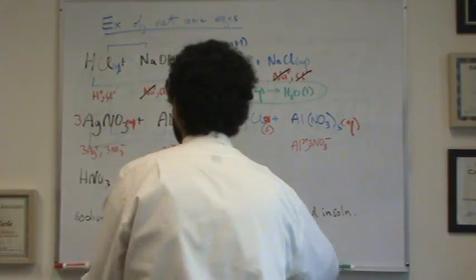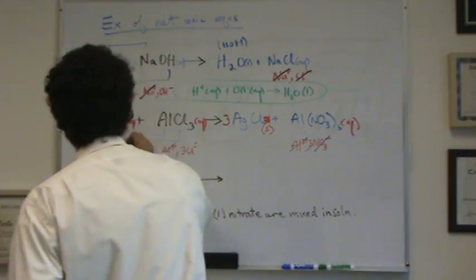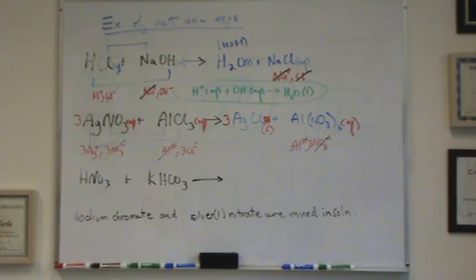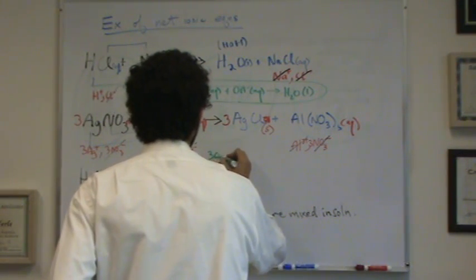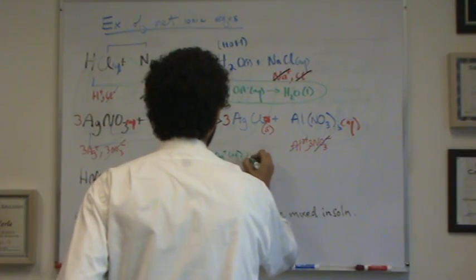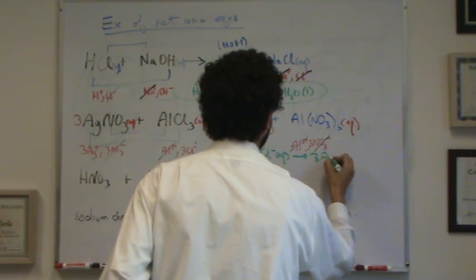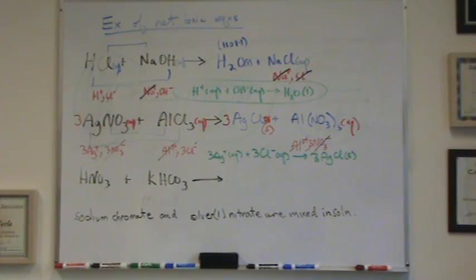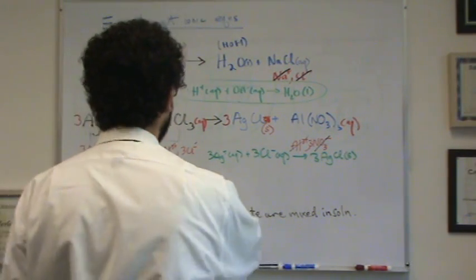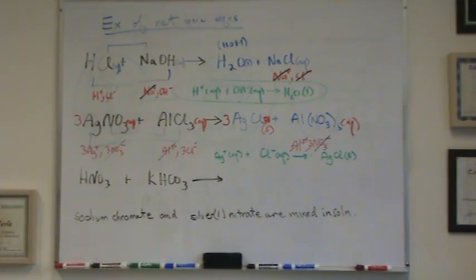I'm going to cancel what's the same on both sides. That would be the aluminum and the nitrate, three of them. Now I want to write my net ionic equation with what's left over. Everything I crossed out is spectator ion. So I have three Ag plus aqueous plus three Cl minus aqueous goes to three AgCl solid. So that's my net ionic equation.